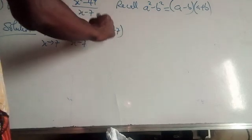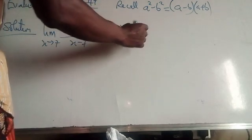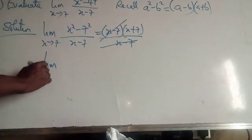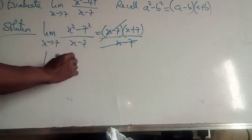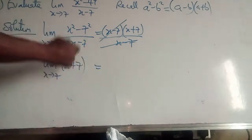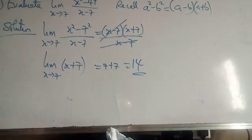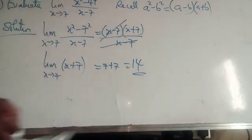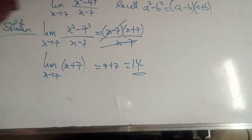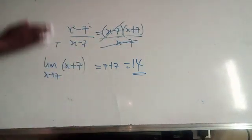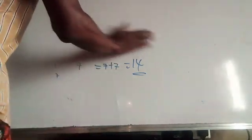The (x minus 7) in the numerator and denominator cancel out completely. We are now left with the limit as x tends to 7 of (x plus 7). Substituting x = 7 gives 7 plus 7, which equals 14. So the answer is 14. What you previously thought had no limit actually has a limit when you look at it closely and solve it using algebraic factorization.